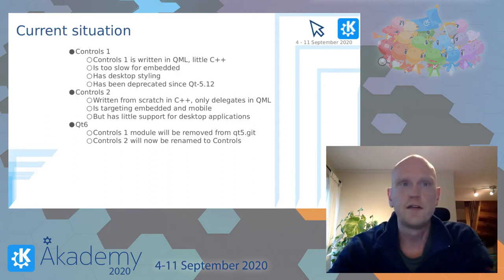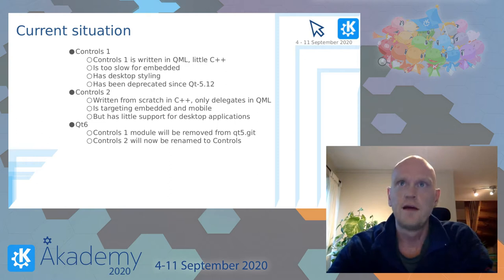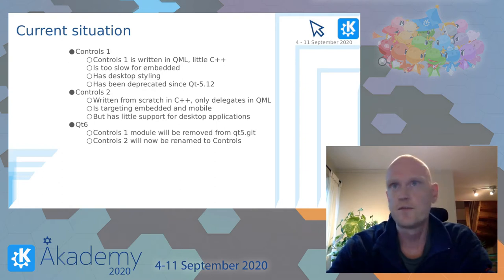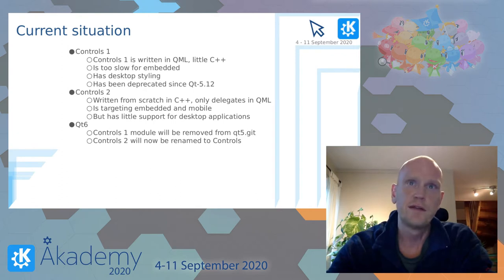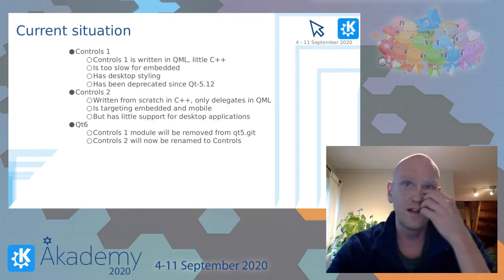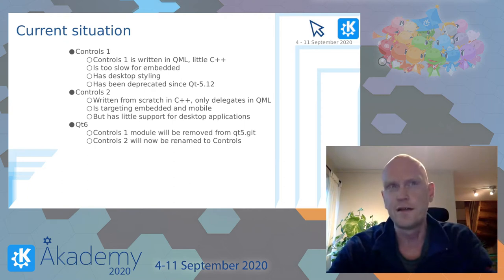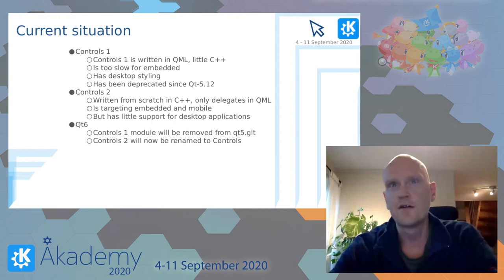Let's take a brief look at the current situation. Controls 1 was our first goal at providing a UI framework using QML. All the controls were more or less written 100% in QML without much C++. At that time QML was pretty new for everyone, also for us, which meant that we didn't really know what to expect with regards to performance. The styling API ended up being quite inefficient by design. It created a lot of Q objects and had many fat delegates